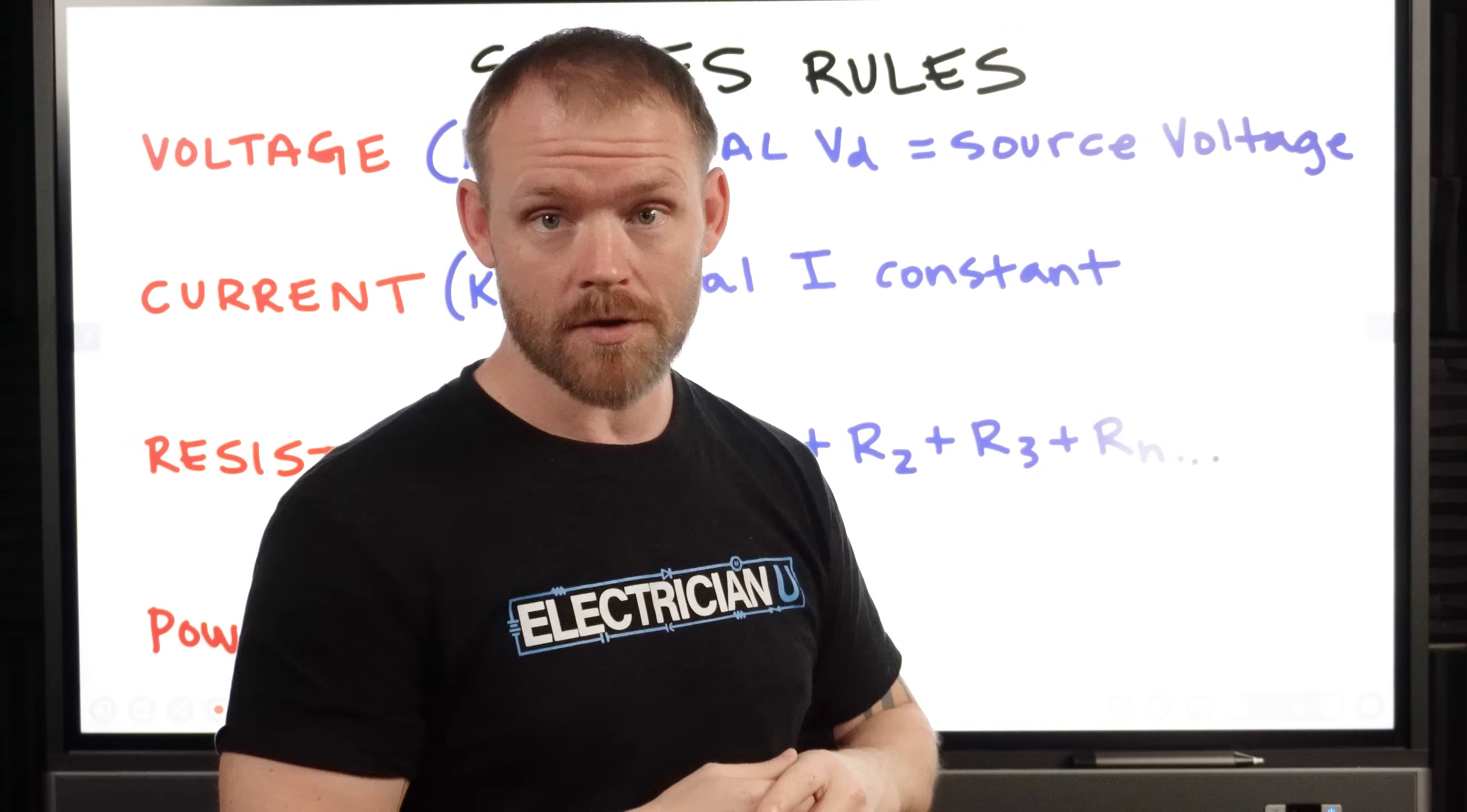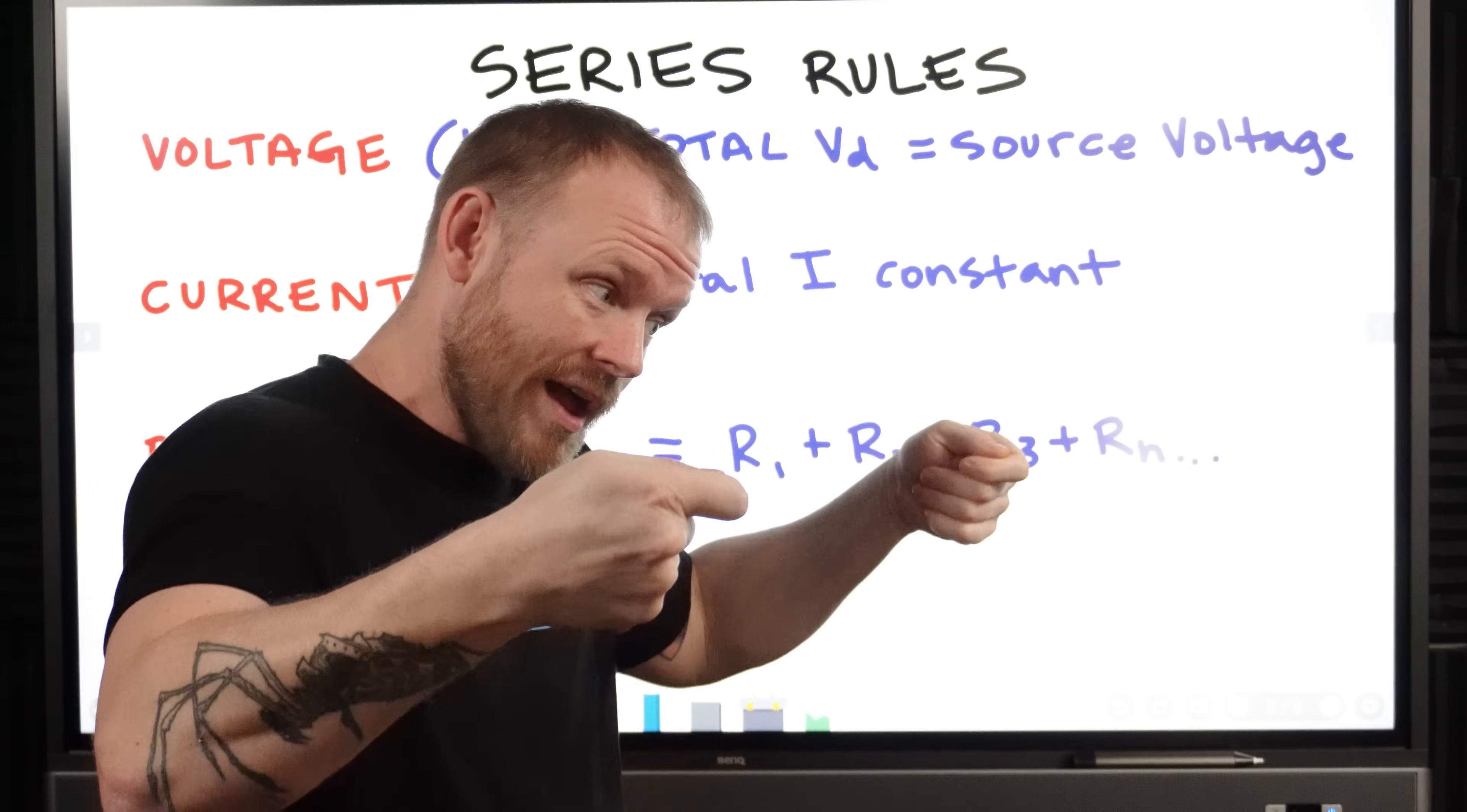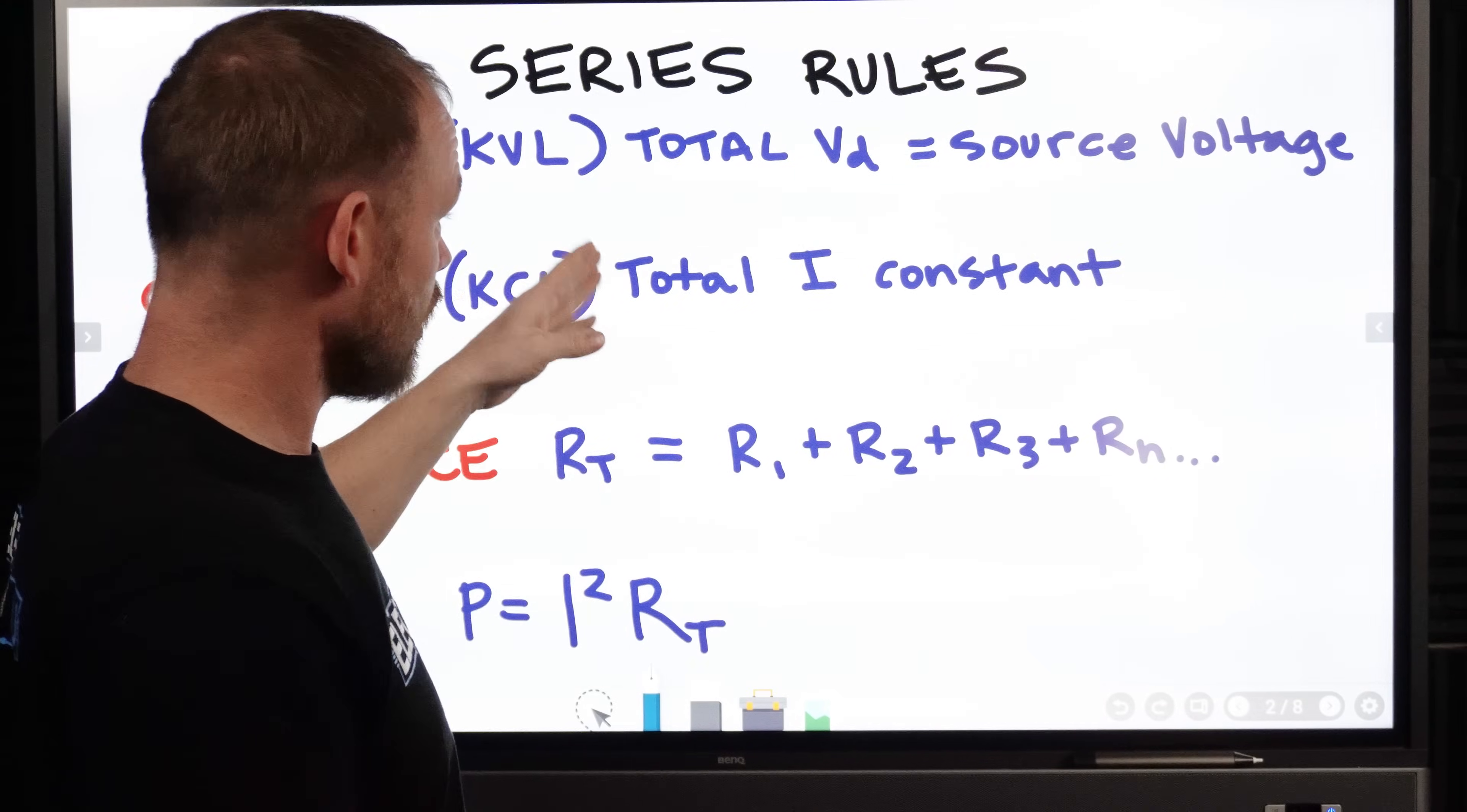Then Kirchhoff's current law says that in a series circuit specifically, the amount of current through that circuit is constant. So it doesn't really matter what your resistances are. In a series circuit, when you have one resistor and another resistor and another resistor, they're all just one big resistor. So whatever that resistance is, that's going to affect your total current. We take voltage, we apply it across a resistor and the current will just flow based off of how much is resisting it. If you increase the size of a resistor, there's going to be more opposition to current flow, so you're going to have less current, but it's going to be constant over all resistances because they're just in line with each other making one large resistor.